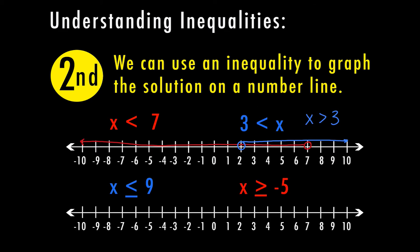We also have the or equal to symbols. For x ≤ 9, I find nine on the graph. Since I can also equal nine, I shade in the circle — a closed circle — and shade everything less than nine to the left, including nine. For x ≥ −5, I find negative five, color it in with a closed circle, and shade everything greater than negative five, showing x can be any number negative five or greater.